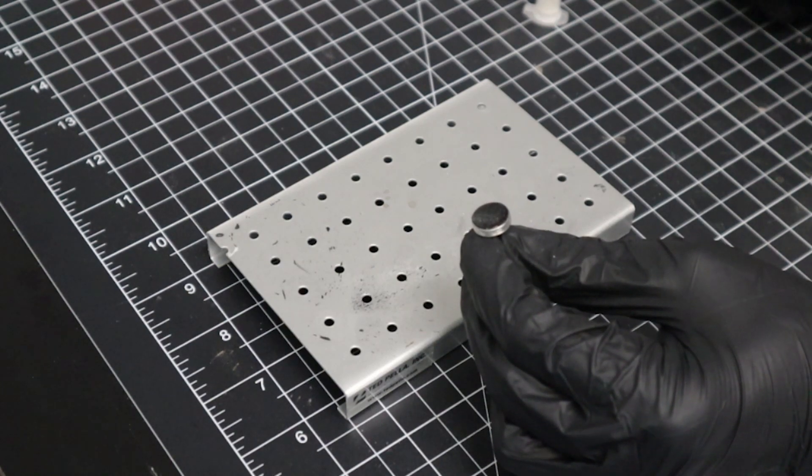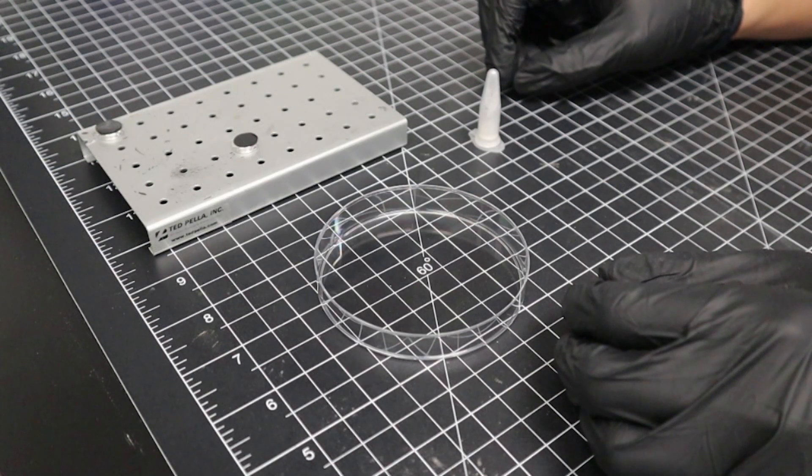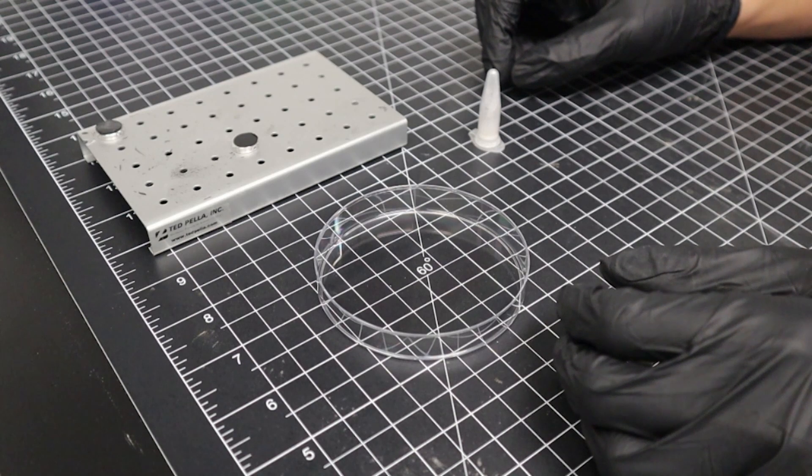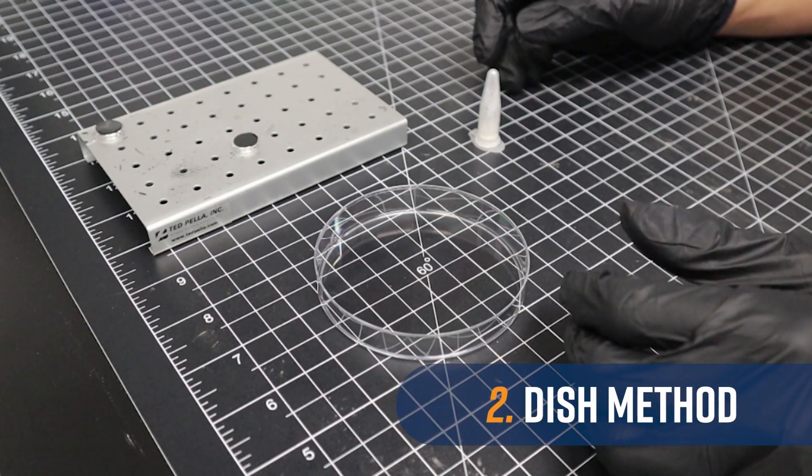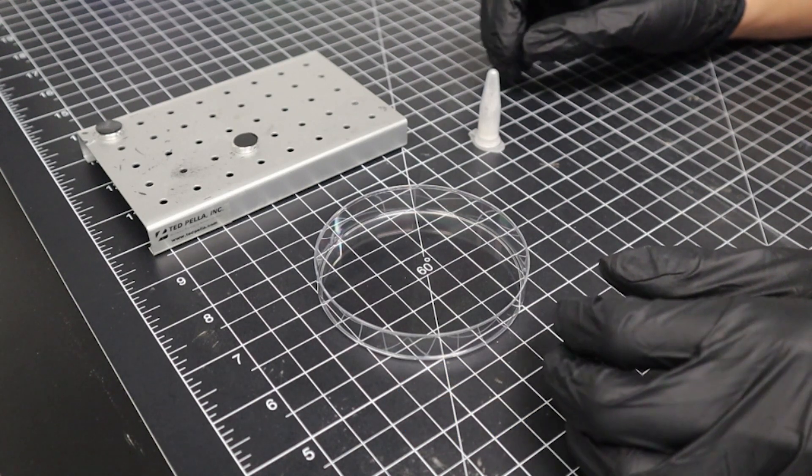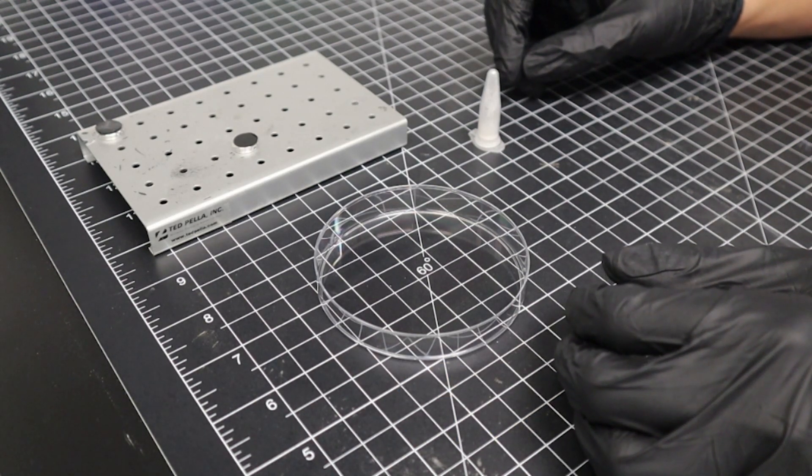Next, we'll take a look at the dish method. For particles ranging from 500 microns to 1 micron in size, the dish method of sample preparation is an excellent option. It is incredibly simple to execute, even more so than the flick method.